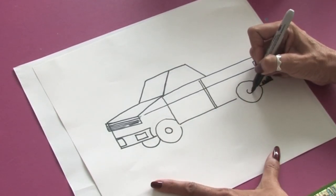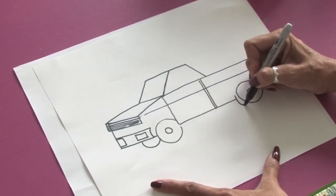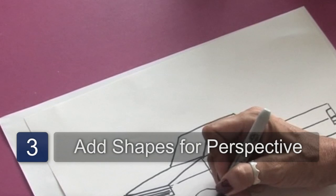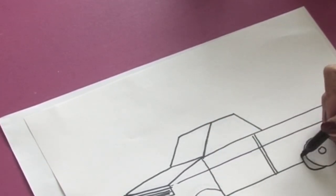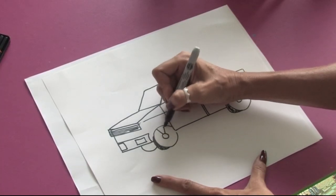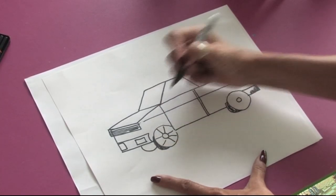We'll do two more small circles here, just some more basic shapes just to give a little bit of perspective to the tires. And draw in some little spokes.